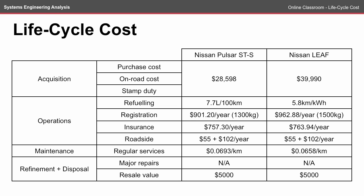I've used the refueling values from an earlier online classroom. Registration in the ACT is based on weight — the Nissan Pulsar fits into the 1300 kg category and the Nissan Leaf fits into the 1500 kg category, but it does have a 20% reduction on the registration component, so it's not that much more expensive per year. Insurance for both vehicles is fairly similar, and the roadside assistance is the same for both cars. The RACQ puts the regular service cost in per-kilometre rates, rating the Nissan Leaf at a slightly lower 6.5 cents per kilometre.